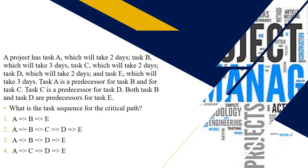Make sure you are well versed in the critical path — you will see questions about it. With this specific question: a project has task A taking two days, task B taking three days, task C taking two days, task D taking two days, and task E taking three days. Task A is a predecessor for task B and for task C. Task C is a predecessor for task D. Both task B and task D are predecessors for task E.